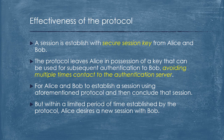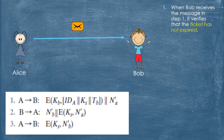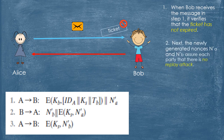The protocol leaves Alice in possession of a key that can be used for subsequent authentication to Bob, avoiding multiple contacts to the authentication server. For Alice and Bob to establish a session using the aforementioned protocol and then conclude that session, within a limited period of time established by the protocol, Alice desires a new session with Bob. Step 1: When Bob receives the message, he verifies that the ticket has not expired. Step 2: The newly generated nonces Nend and NB assure each party that there is no replay attack.